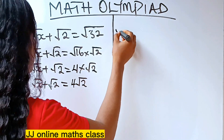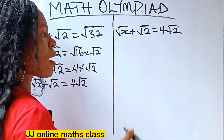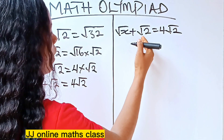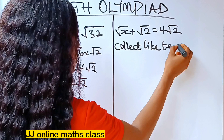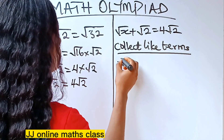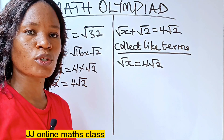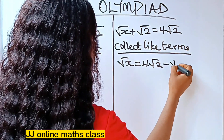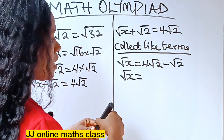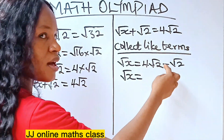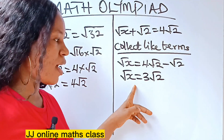From root x plus root 2 equals 4 root 2, we transfer root 2 to the other side by collecting like terms. So root x equals 4 root 2 minus root 2. Since root 2 is the same as 1 root 2, we have 4 minus 1, giving us root x equals 3 root 2.